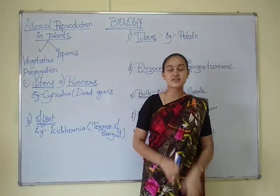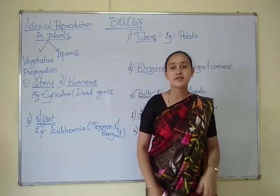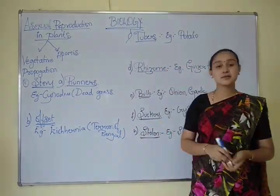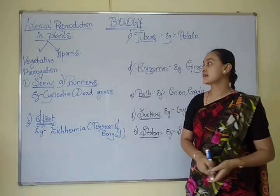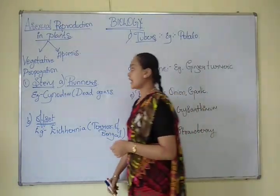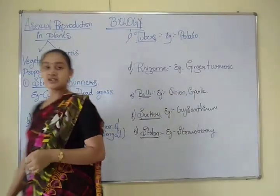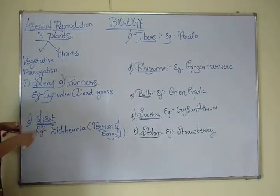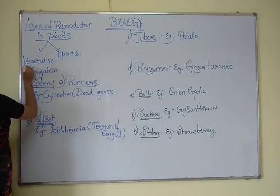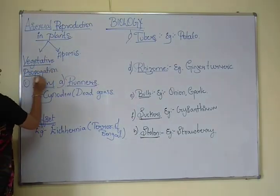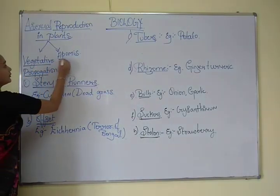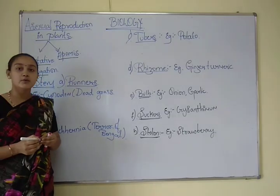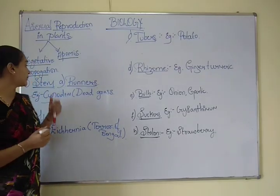Good morning students. Today's topic is asexual reproduction in plants. There are two types of asexual reproduction in plants: the first type is vegetative propagation and the second is apomixis. First, we shall discuss vegetative propagation.